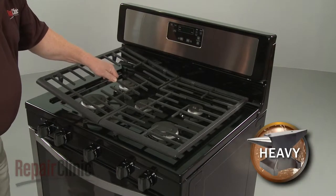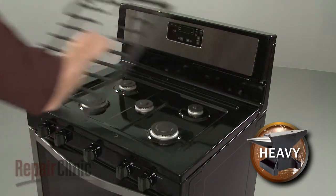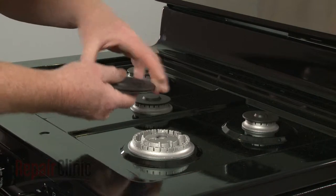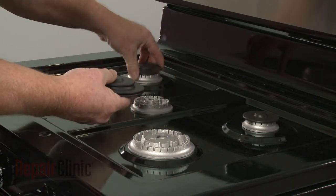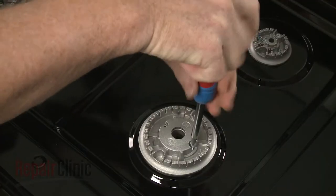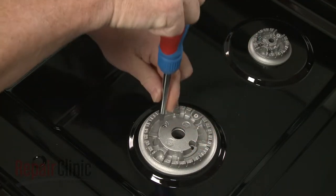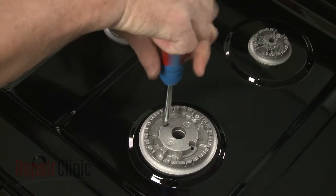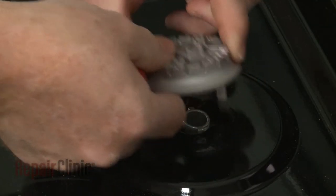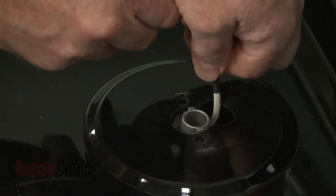Carefully lift off the burner grates and remove all of the burner caps. Using a Phillips-head screwdriver, unthread the screws securing the burner heads. Disconnect all of the spark wires from the surface igniters attached to the heads.